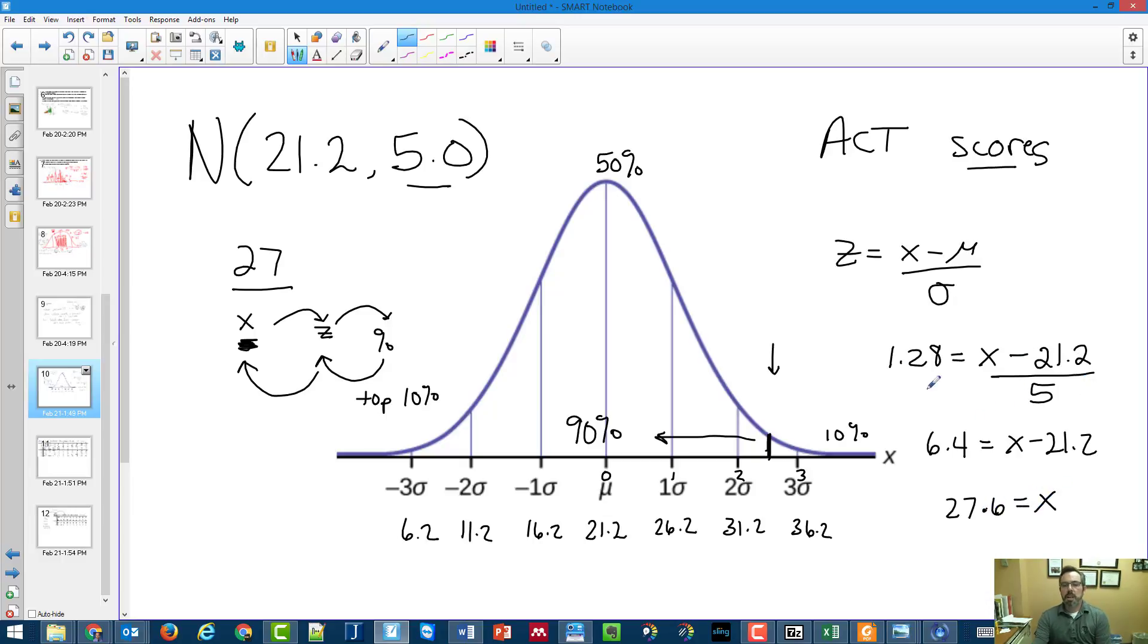So my ACT score must have been a 27.6. I don't know if ACT scores actually do a 0.6. So I suppose I would say approximately 28 would be my score. If I want to be in the top 10 percent of people, I'd have to score above a 27.6, which might mean I haven't taken the ACT in a long time, I have to score 28.